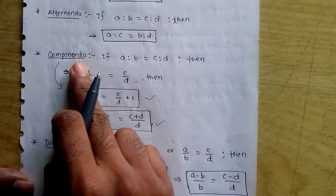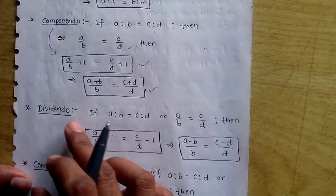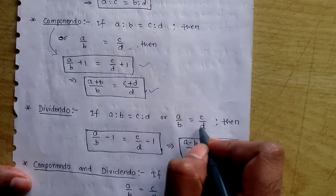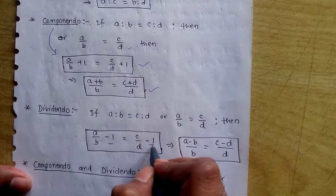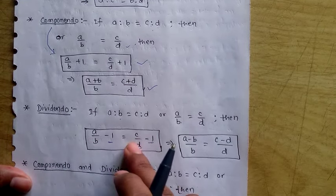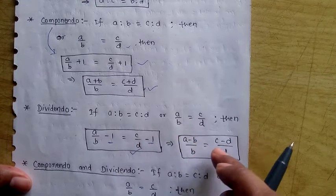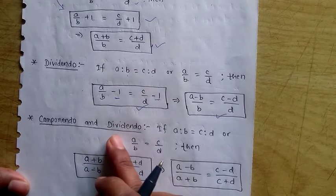The next one is Dividendo. If a is to b equals to c is to d, i.e., a/b = c/d, then we subtract 1 from both sides. Simplifying, we get (a − b)/b = (c − d)/d. This property is called Dividendo.